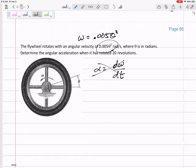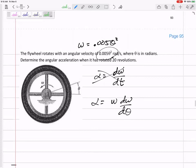But I do have this one: alpha equals omega dω/dθ. That's on your formula sheet. Where did it come from? Remember v dv/ds? This is the same thing: omega dω/dθ.